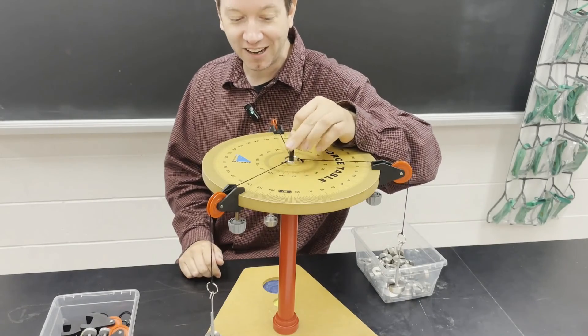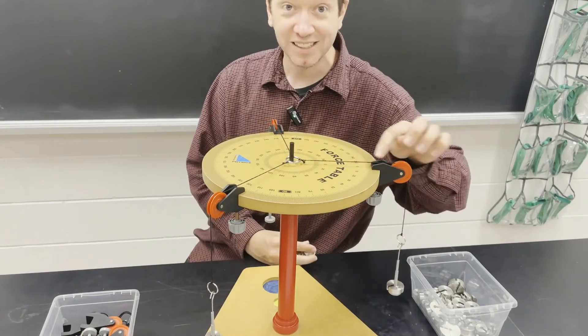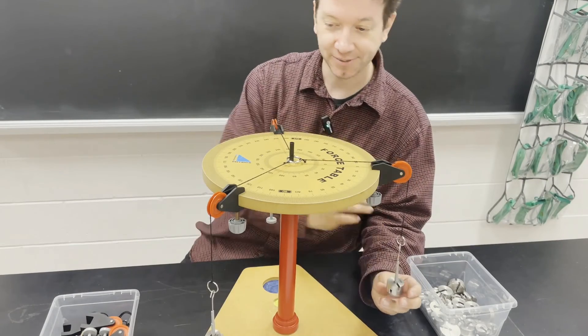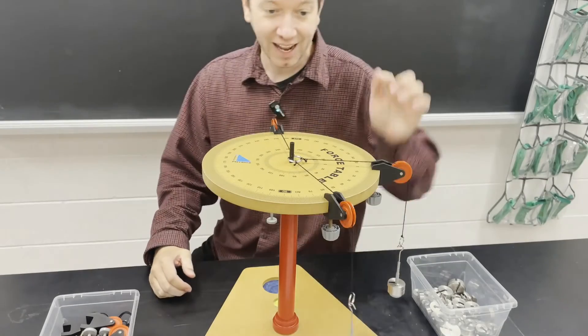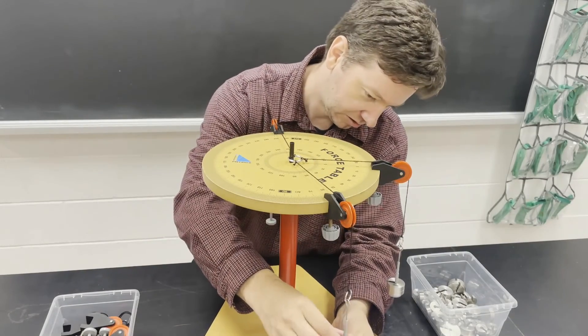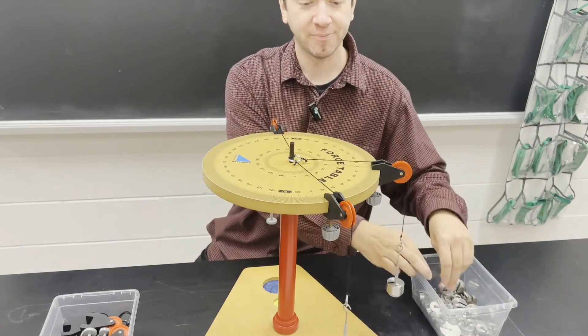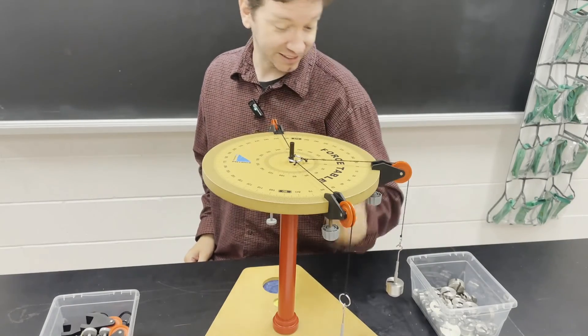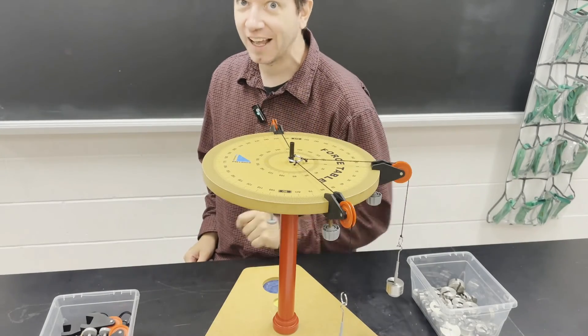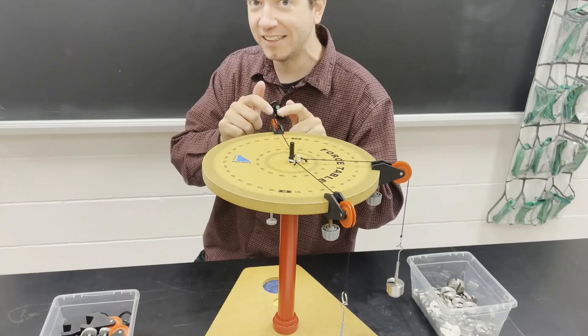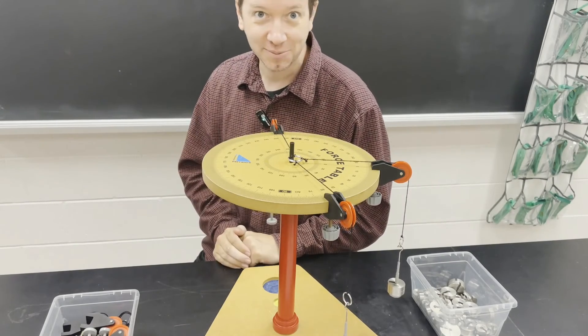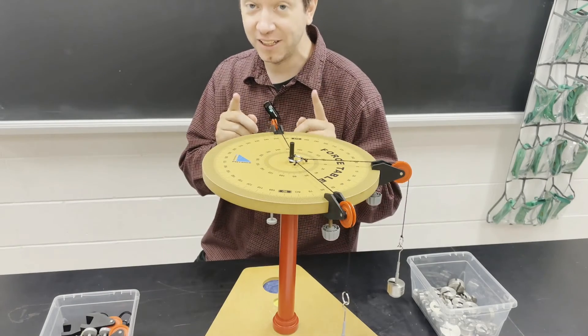Now I'm going to give you one to try on your own. So at 0 degrees, I'm going to place a total of 100 grams. And then at 60 degrees, I am going to place 50 grams. So we got 100 grams at 0 degrees, 50 grams at 60 degrees. Try the calculations yourself to figure out where I need to place the third string and how much weight I need to add to it in order to get the system in equilibrium. So pause the video, try it.